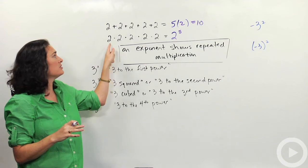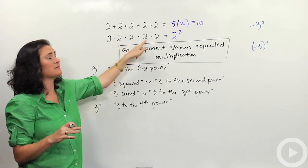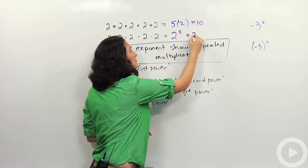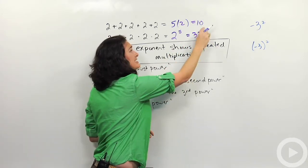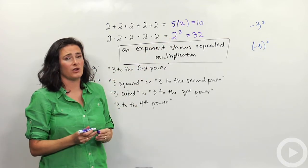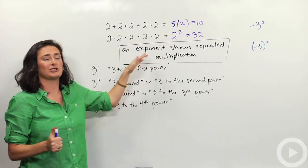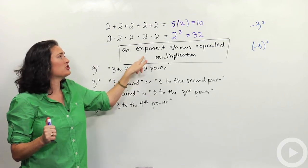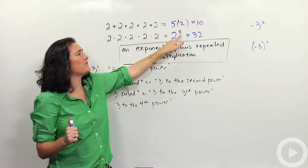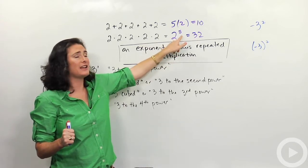2 to the fifth power: if you do 2 times 2, which is 4, times 2 is 8, times 2 is 16, times 2 again is 32. You'll notice these are pretty different-looking answers, although the notation is very subtle. This is a key, key idea — I put it in a box here to be dramatic. An exponent shows repeated multiplication. This 2 to the fifth shows I'm doing 2 times itself 5 times.